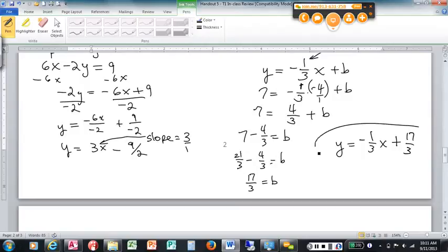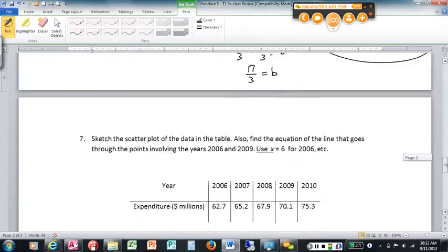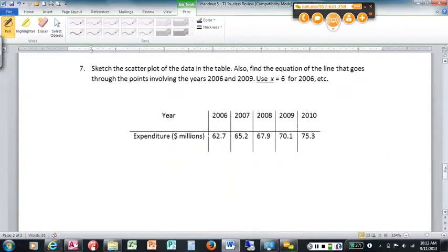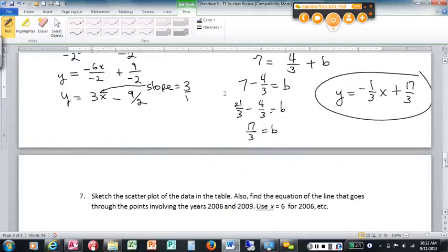Okay? We will probably have to do such a one as that on the test. Last but not least. Everybody get that one? Sketch the scatterplot of the data in the table for number 7. Also find the equation line that goes through the points involving the years 2006 and 2009. Use 6 for 2006, etc.